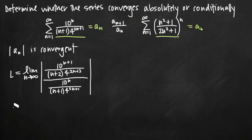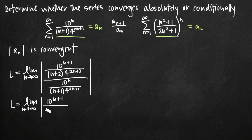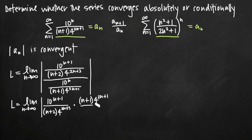This is sort of an intermediate step that people skip, because you always get a fraction divided by a fraction with this test. We can take the numerator — 10 to the n plus 1 divided by n plus 2 times 4 to the 2n plus 3 — and instead of dividing by the denominator fraction, we multiply by its reciprocal: n plus 1 times 4 to the 2n plus 1, all divided by 10 to the n.